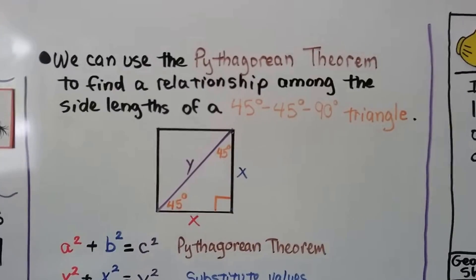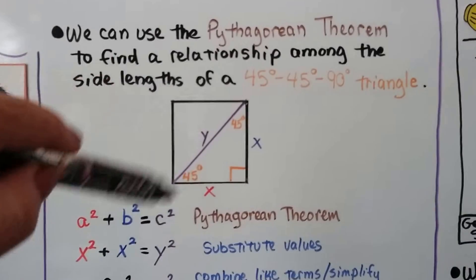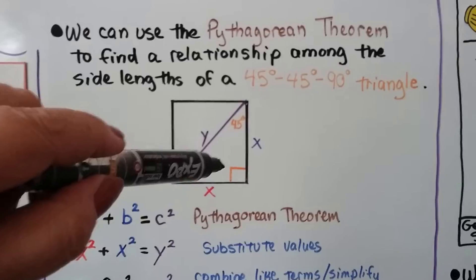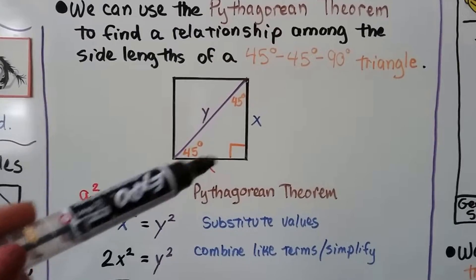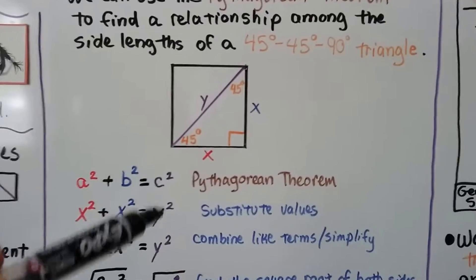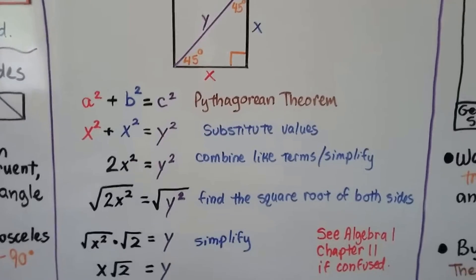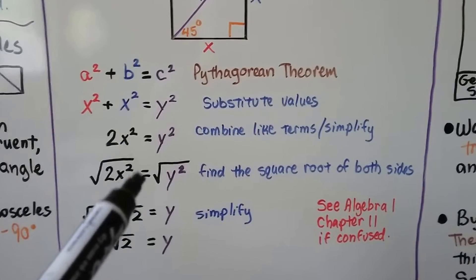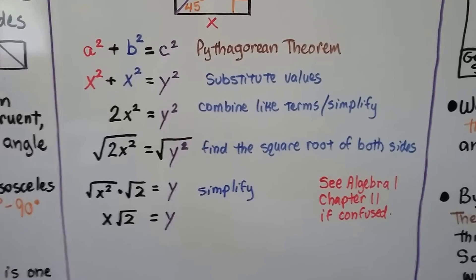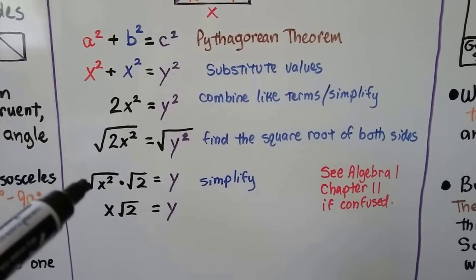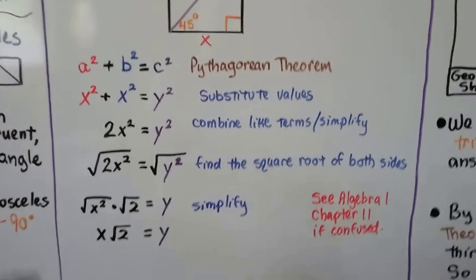We can use the Pythagorean theorem to find a relationship among the side lengths of a 45-45-90 triangle. Take a look at this diagram — the diagonal of the square is the hypotenuse for each triangle. The Pythagorean theorem says a² + b² = c². Substituting x for both legs gives x² + x² = y², which simplifies to 2x² = y². Taking the square root of both sides: the square root of 2x² equals x√2, which equals y.